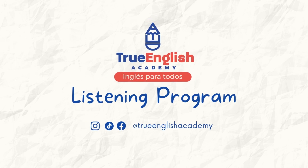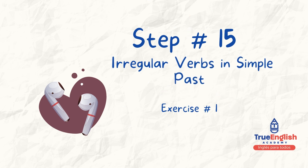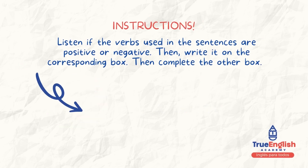True English Academy Listening Program. Step number 15. Irregular Verbs in Simple Past, Exercise 1. Instructions: Listen if the verbs used in the sentences are in positive or negative. Then write it on the corresponding box. Then complete the other box.